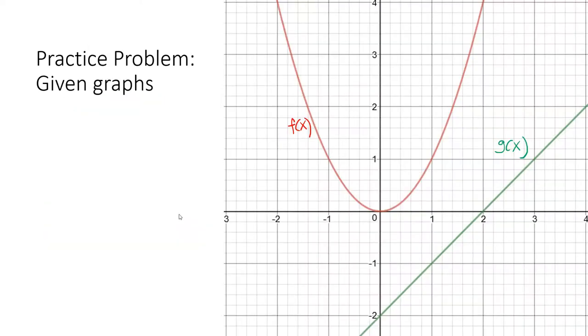This time we're given graphs. And it says to find f(g(3)). So find g(3). So when x is 3, g(x) is 1, which means we have f(1). Now do it again. When x is 1, f(x) is also 1. So final answer, 1.